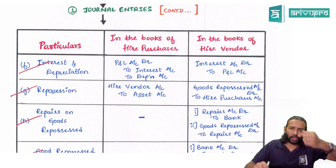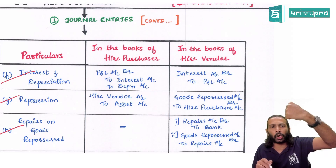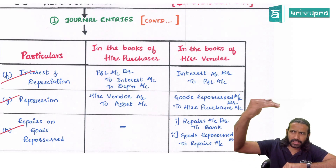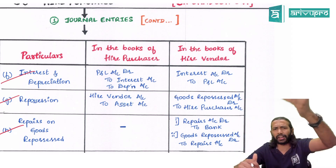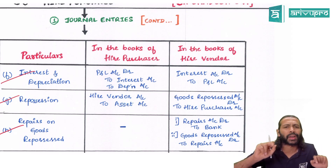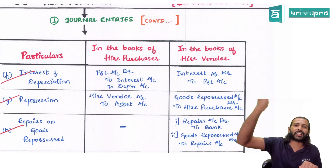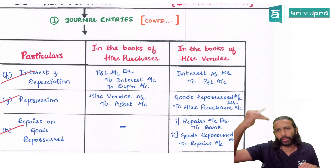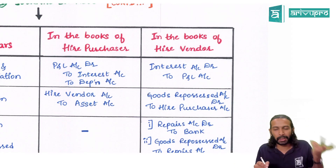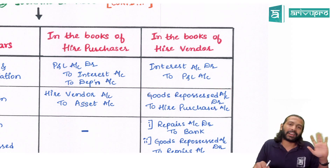When the hire vendor originally sold the goods, the entry was Debtors Account debit to Sales. When repossession occurs, ideally the reverse would be Sales Account debit to Debtors. But instead of touching Sales, we open a specific account called Goods Repossessed Account. So instead of Sales Return Account debit to Debtors, we say Goods Repossessed Account debit to Higher Purchaser Account — because the higher purchaser is a debtor for us.